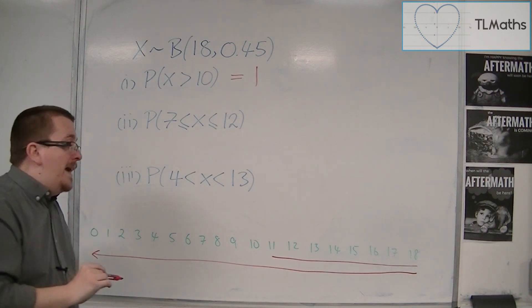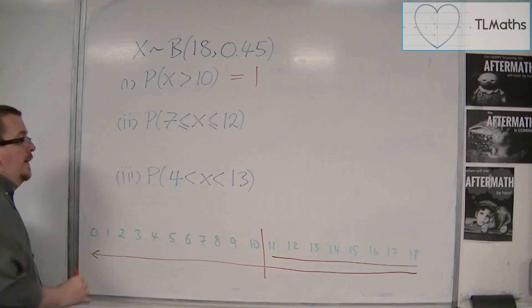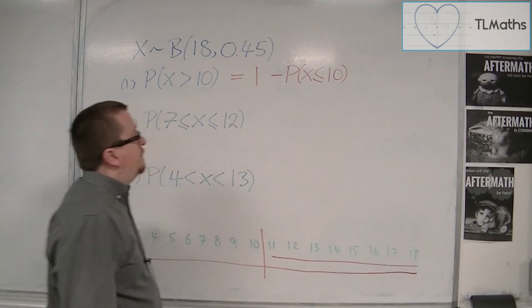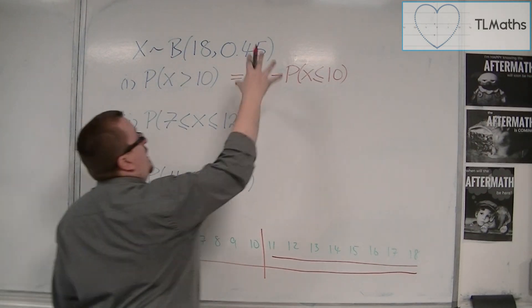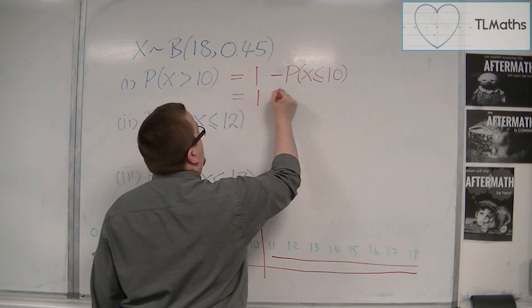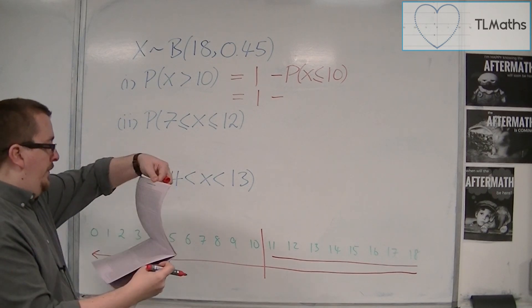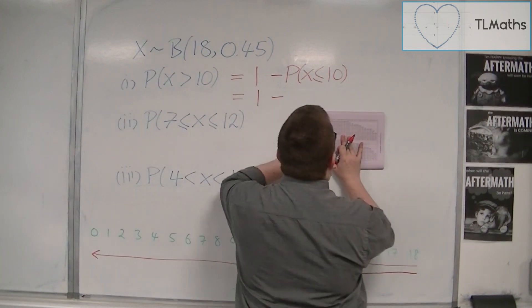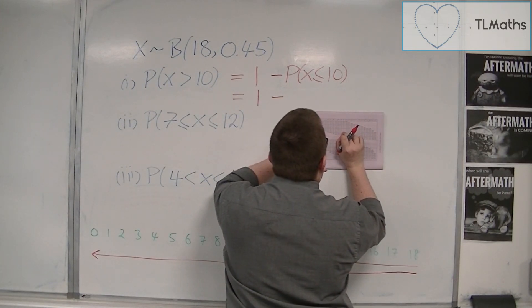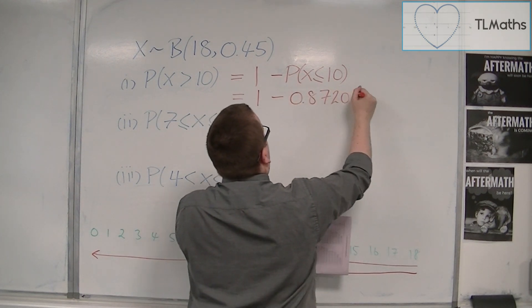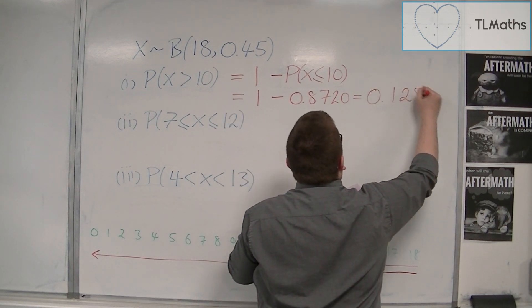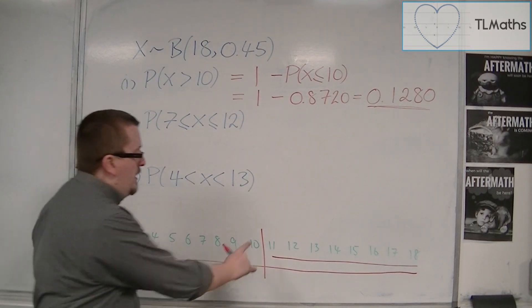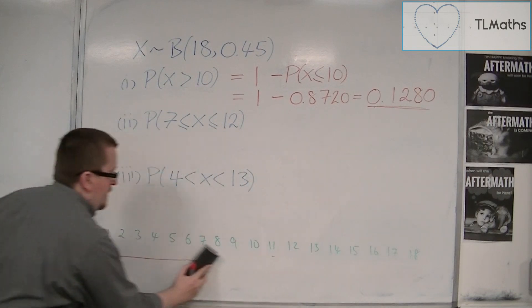So I know that I could work out all the way up from 0 to 18 as 1, and then take away, subtract the ones I don't want. I don't want 10 and lower, so I don't want x is less than or equal to 10. In calculating this, I can actually calculate that, and this is a probability I can look up in the tables. So the binomial tables, we're looking at n is 18, so we're on page 16, and 0.45. Then we want less than or equal to 10, so 0.8720. And so that's 0.1280. That's the probability I need. So having this number line can really help.